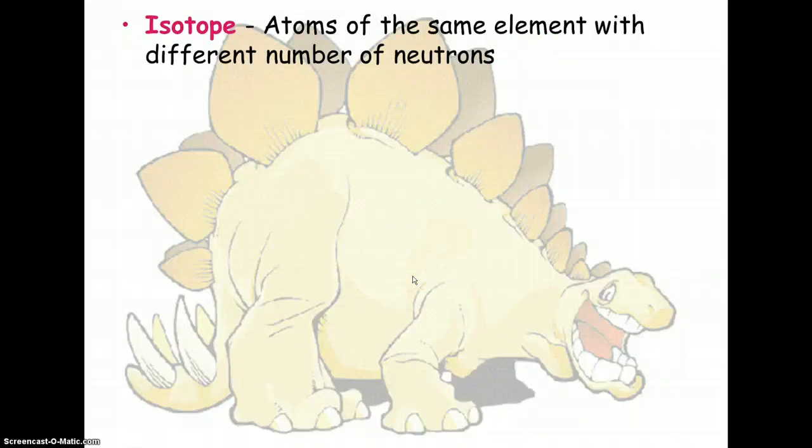So what we say is that these are different isotopes of carbon. In other words, it is true that all elements of carbon would have six protons, because that's what makes it carbon, but they don't necessarily all have the same number of neutrons.